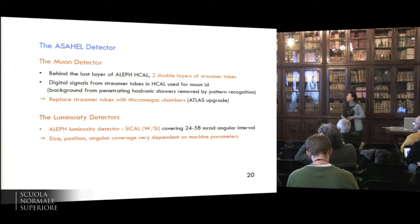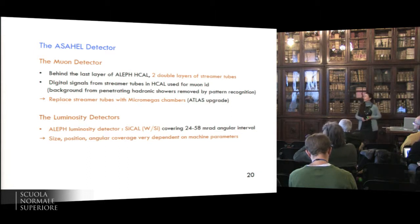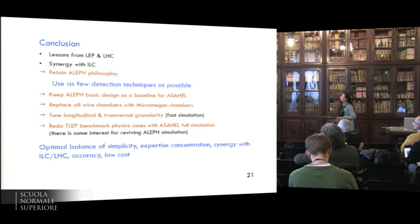For the luminosity detectors, one possible option would be a sampling calorimeter of tungsten and silicon. But as we have seen, the size, position, angular coverage is very dependent on machine parameters. So it's not that simple to design it right now.